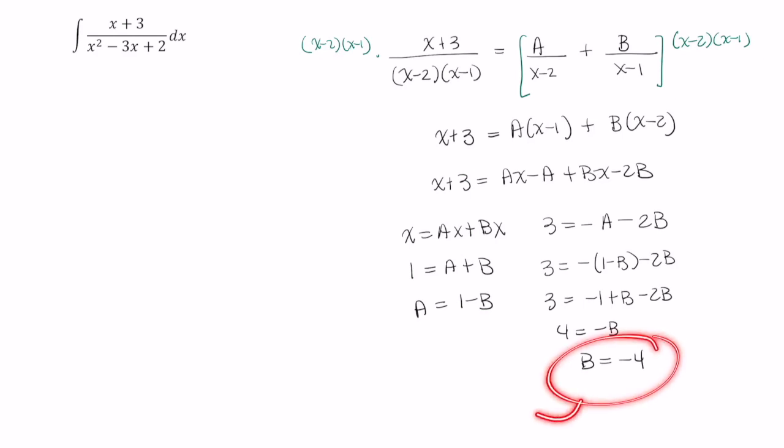Now that I know what b is, I can go ahead and put that right back here to get a equals 1 minus negative 4, or a equals 5.